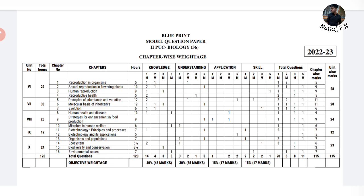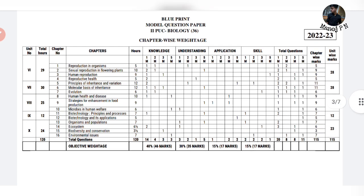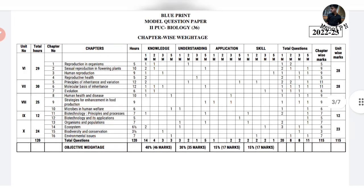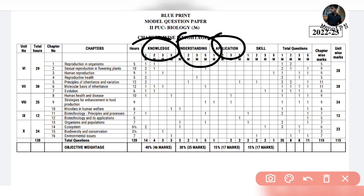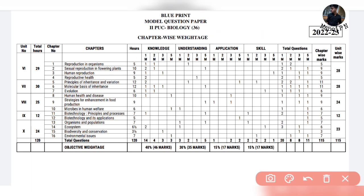If you want to subscribe to the channel, please subscribe. Now let's get into the video. First of all, we'll analyze the blueprint. There are four categories: knowledge, understanding, application, and skills — the difficulty level increases across these categories.